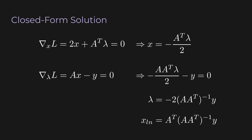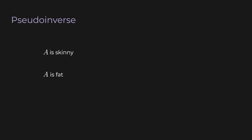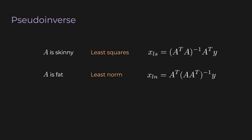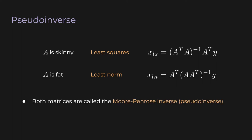Now it's just algebra. We rearrange the first equation as x equals negative A-transpose lambda over 2, and plug that into the second equation to get negative A A-transpose lambda over 2 minus y equals 0. Rearranging gives lambda in terms of A and y, which are given constants. Plugging back into the top equation gives our least norm solution: x_ln equals A-transpose times the inverse of (A A-transpose) times y. This should look vaguely familiar — both the least squares and least norm formulas are called the Moore-Penrose inverse, or pseudo-inverse.